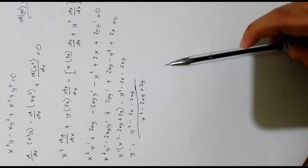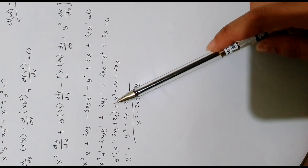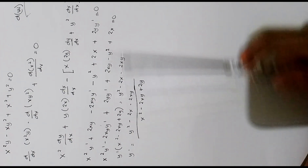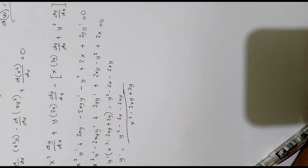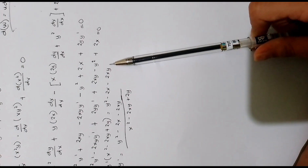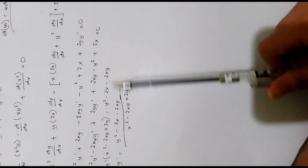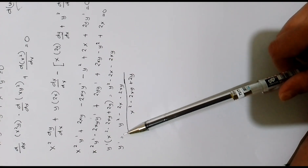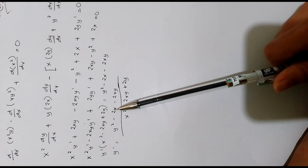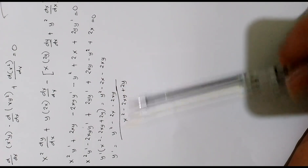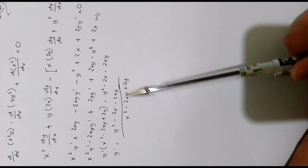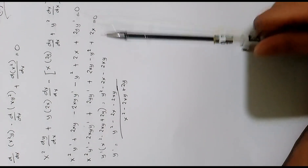So y prime times the quantity x squared minus 2xy plus 2y equals zero. Transposing, y squared minus 2x minus 2xy goes to the other side. Dividing both sides, we get y prime equals y squared minus 2x minus 2xy, divided by x squared minus 2xy plus 2y. And that's it.